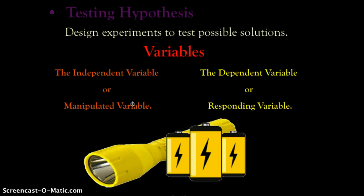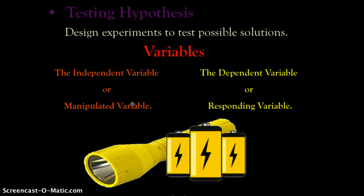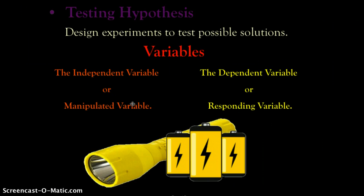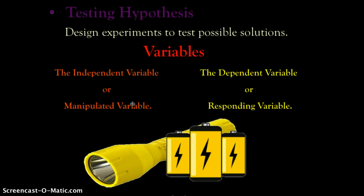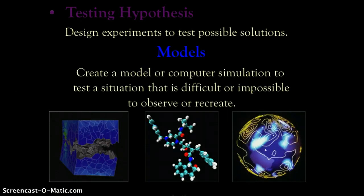What we're testing are called variables. The independent variable is the one you manipulate, and the dependent variable is the one that responds. If we're testing whether the batteries work, changing the batteries is the independent variable. The dependent variable is whether the flashlight turns on or stays off — it tells us whether we're right or wrong.